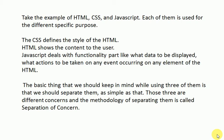Take the example of HTML, CSS, and JavaScript. Each of them is used for a different specific purpose. CSS defines the style of the HTML — like what color will be applied to any div, paragraph, font size, alignment, etc. HTML shows the content to the user. JavaScript deals with the functionality part — like what data will be displayed, what actions will be taken, or if you click a button, what event will be fired and what actions will follow.